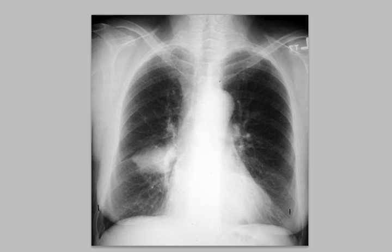An abnormality can only present in three different ways on a chest x-ray, or on any x-ray for that matter. Number one is an opacity, also known as a radiopacity. We are dealing with radiation, and you need to understand what opacity means in this context.